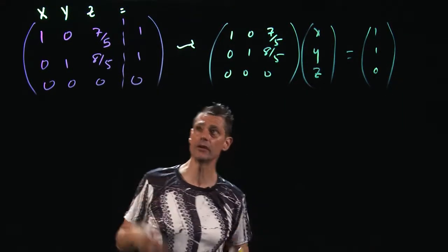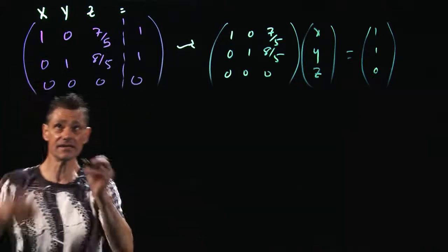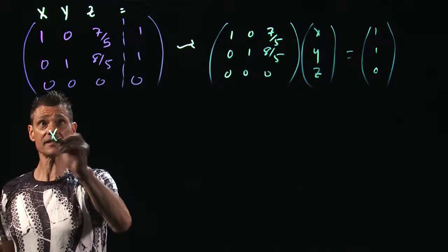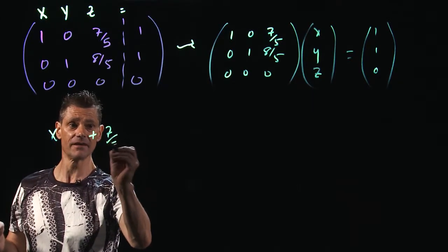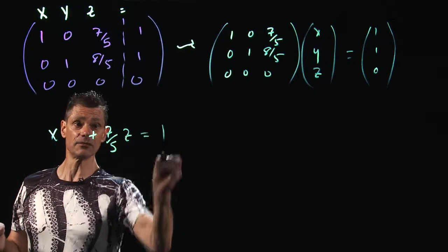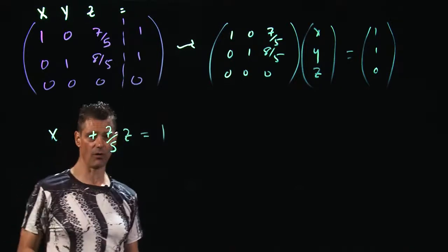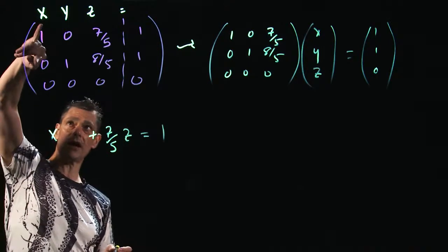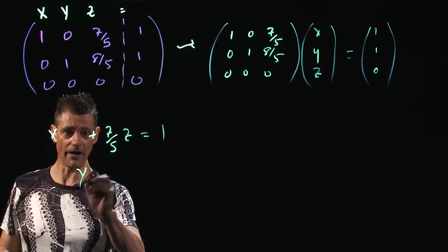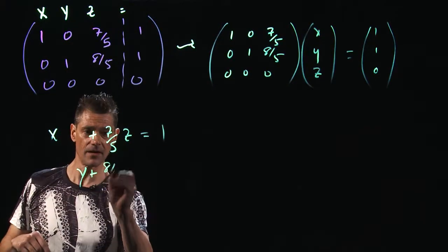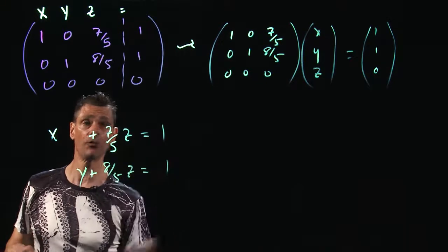So really how to read this, basically, is this is 1 times x plus 0 times y, which I'm not going to write, plus 7 fifths z is equal to 1. I left a little space for a y column. This says 0 times x, which is just 0, plus 1 times y, which is y, plus 8 fifths times z, 8 fifths times z is equal to 1.